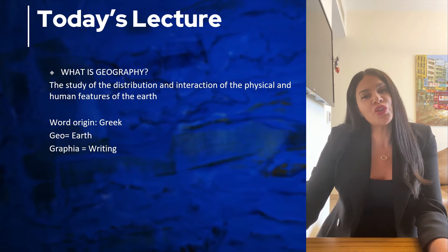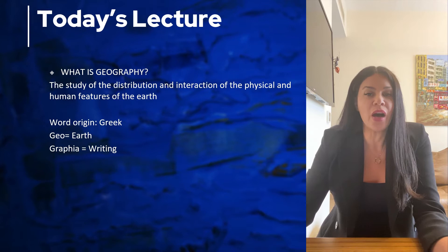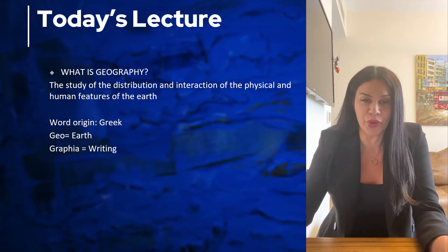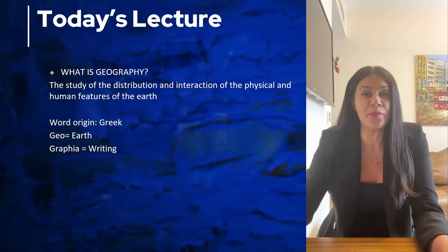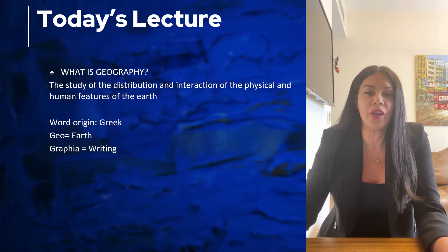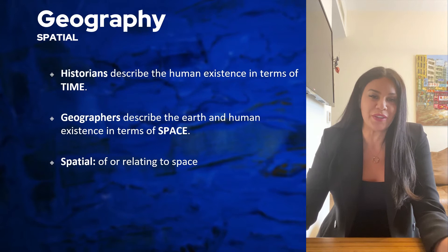Geography is the study of the distribution — how things are arranged — and the interaction of the physical and human features of the earth. The word geography comes from two Greek words, geo and graphia. Geo means earth and graphia means to write, or to draw, or in other words, to describe. So put together, geography literally is the describing of the world, and that's what we're going to do in this course.